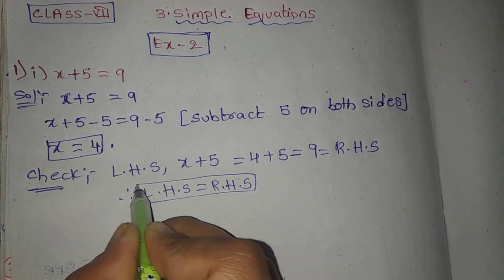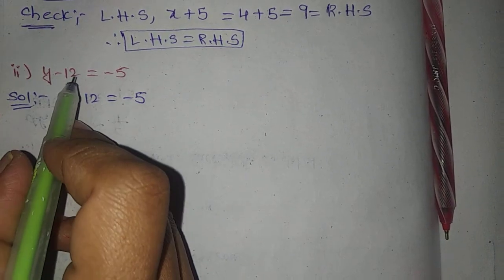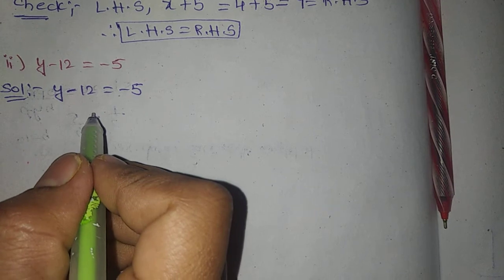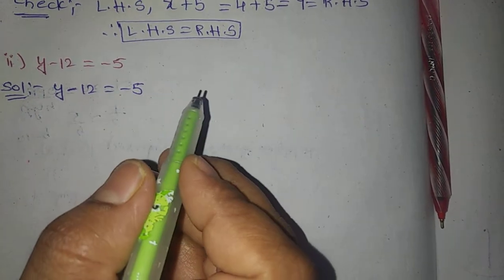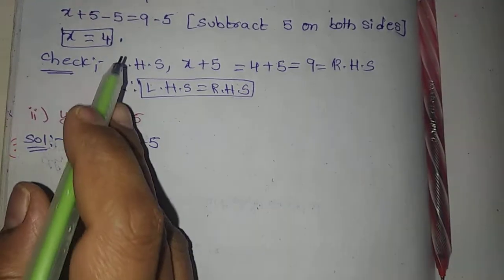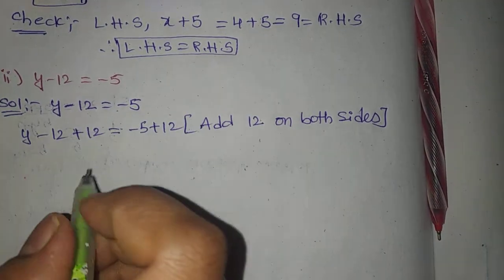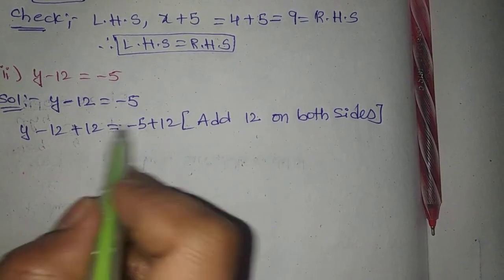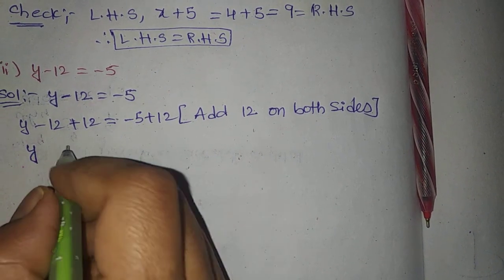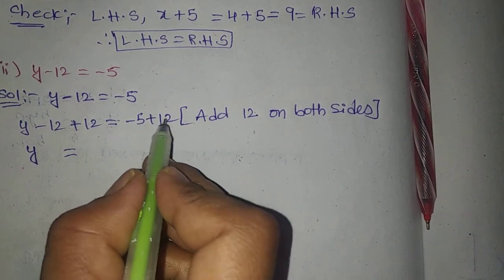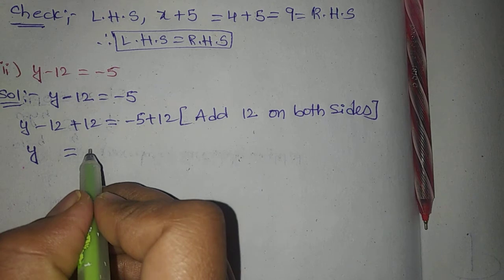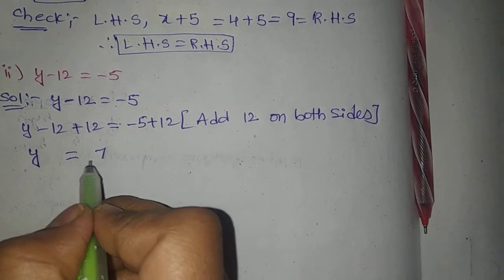This is not transposing. Second one: y minus 12 is equal to minus 5. To remove minus 12, we add plus 12 — the opposite sign with the same number. So we add 12 on both sides. Minus 12 plus 12 is 0, so y remains. y equals minus 5 plus 12.